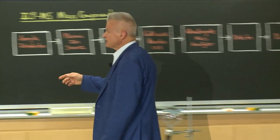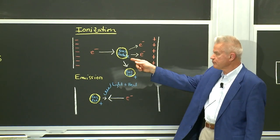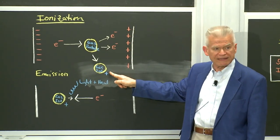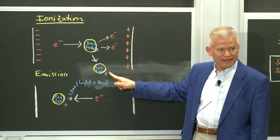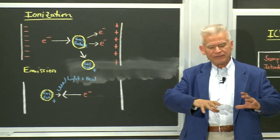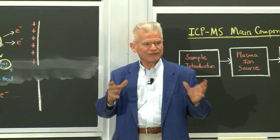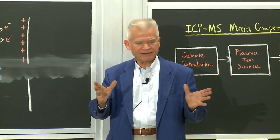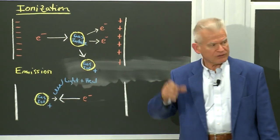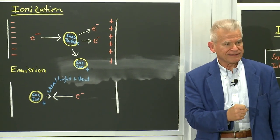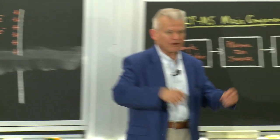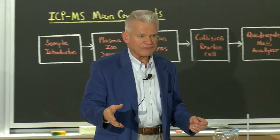Ionization is when an electron hits a gas particle, kicks an electron off, and produces a gas ion. That's ionization. That's what's happening on the sun and the stars — you've got a sea of ions that's molting hot. And then emission happens when the gas ion grabs its electron back and gives off light.